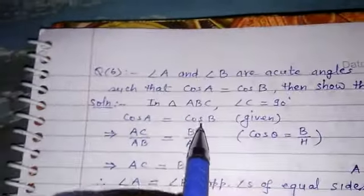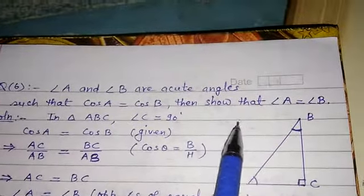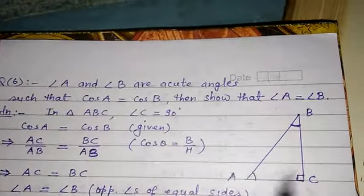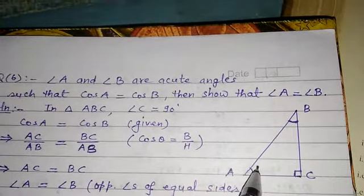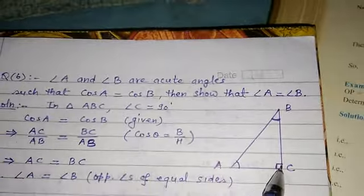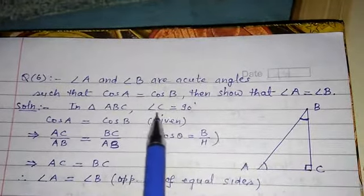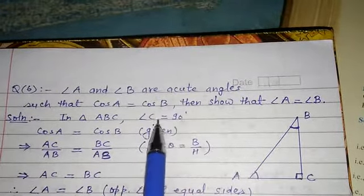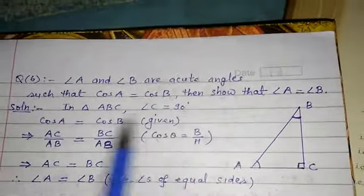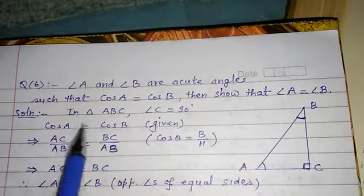Here, given a triangle ABC. Since A and B are acute angles, the remaining angle C must be a right angle. So in this triangle, angle C equal to 90 degrees — it is not given directly but implied. And it is also given that cos A equal to cos B.